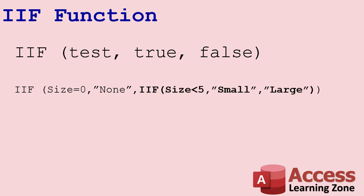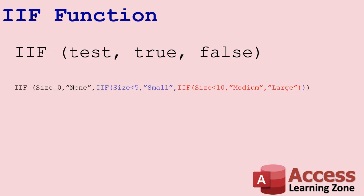The nested IF function says: if the size is less than five, put 'small' there; otherwise put 'large'. So if it's zero it'll be 'none', if it's two it'll be 'small', if it's fifteen it'll be 'large'. And as you can see, as we get bigger it gets even more complicated. Zero is 'none', less than five is 'small', less than ten is 'medium', and ten and larger is 'large'. So if you have four, five, six different nested IF functions, it can start getting hard to understand.